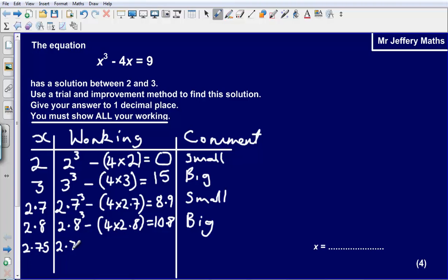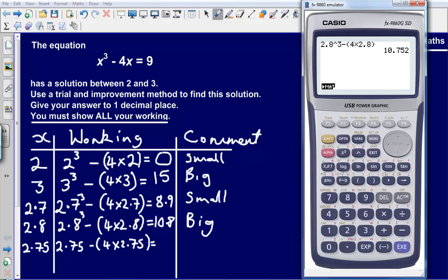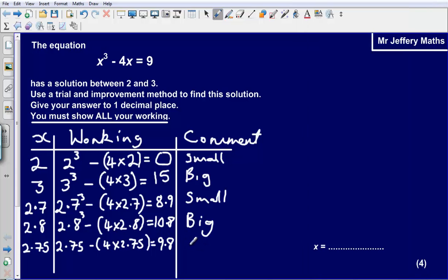So we substitute that value in. So we put 2.75 cubed minus 4 times 2.75. And that gives us an answer of, so let's just put that into our calculator like we did a moment ago. So change the 2.8 to 2.75. Change the other one to 2.75. See what this comes out as. This comes out as 9.79, which we can just call 9.8. And that is still too big.